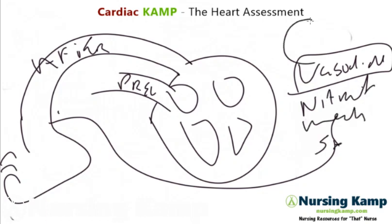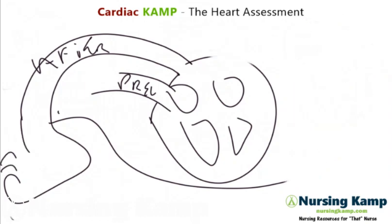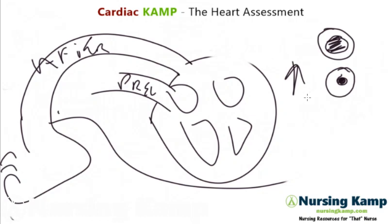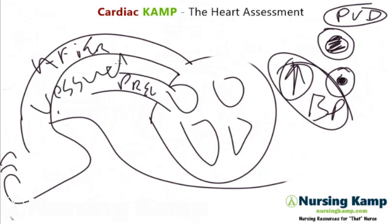If there's a problem with afterload — for example, vasodilation from nitrates or sepsis — that decreases volume and decreases blood pressure. On the other hand, vasoconstriction increases blood pressure because the vessels are squeezing against normal volume. Peripheral vascular disease can cause that. So vessel tone is very important and can affect blood pressure in both directions.